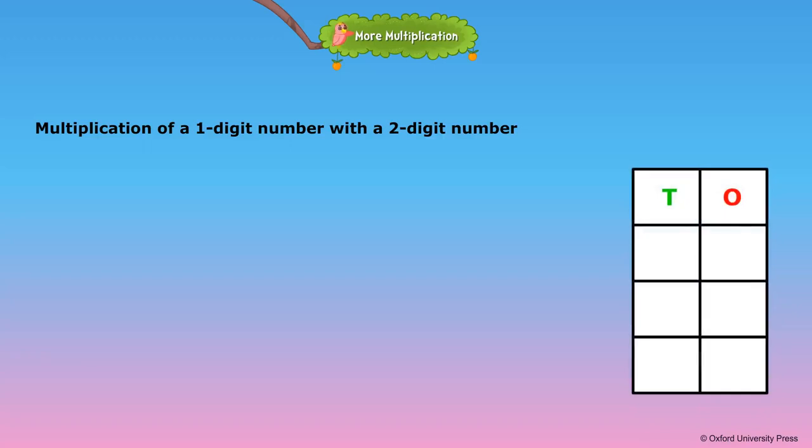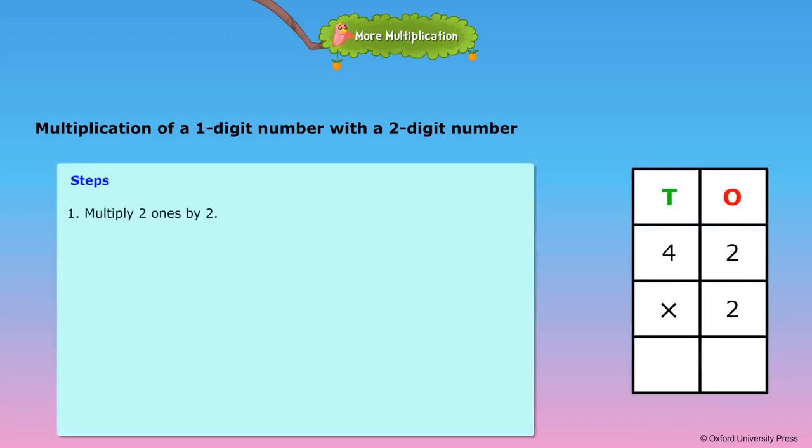Let us multiply a two-digit number, 42, by a one-digit number, 2. Steps 1.